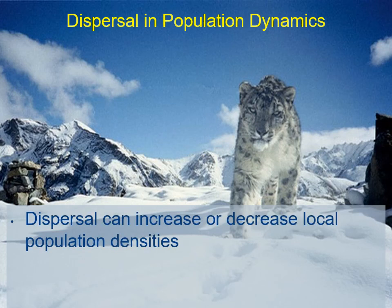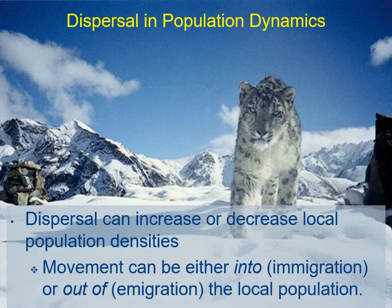Dispersal can increase or decrease the local population depending on those four factors. Immigration is movement into the local population; emigration is movement out. These are really important processes to understand because they also include gene flow, bringing new genes into the population and allowing movement between small subpopulations. Dispersal is not well studied because it's very hard to catch that odd animal moving from one population to the next.